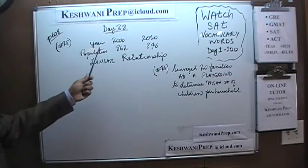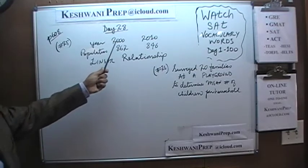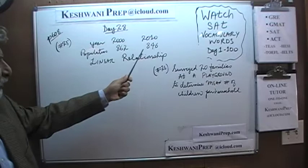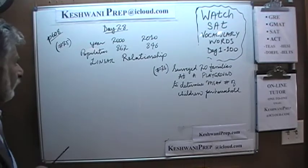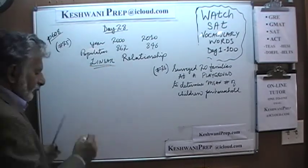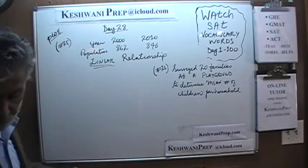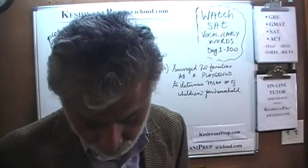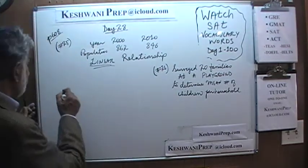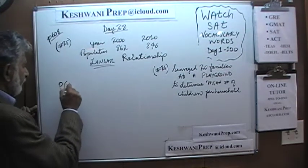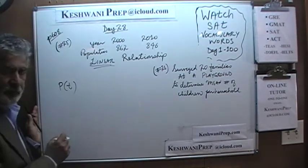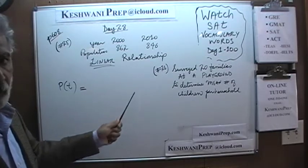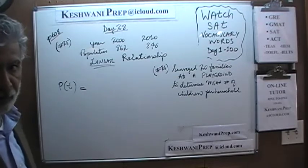So here we are given two years: 2000 and 2010. We are given the population — 862 and 846 — and we are also told the relationship is linear. The question simply is, if the relationship is indeed linear, what would it look like? We have population as a function of time, and we just have to figure out what the slope and y-intercept are going to be because it's a linear solution.